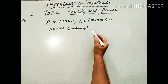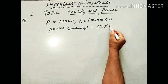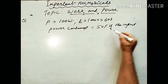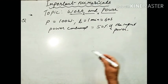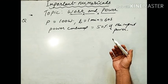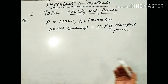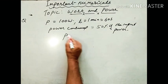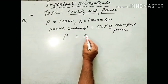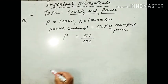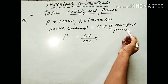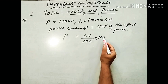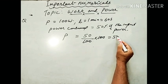Power consumed on stirring the water is 50% of the input power. Input power is 100 Watt, so power consumed = 50% of 100 = 50 Watt. The remaining 50% is wasted.